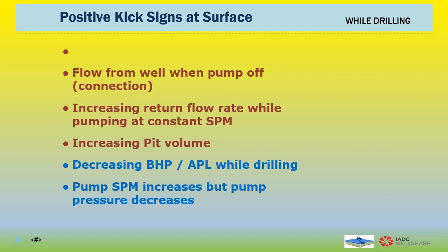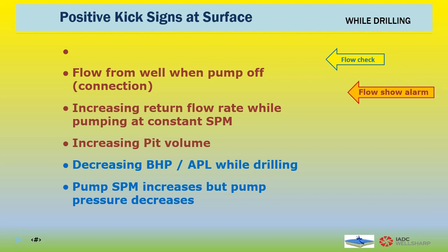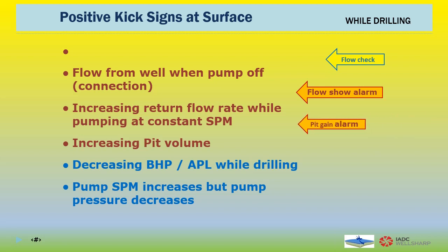How do we know that the well is kicking? 1. Flow from the well when the pump is off, verified by flow check. 2. Increasing return flow rate while pumping at constant SPM, verified by flow show alarm. 3. Increasing pit volume, verified by pit gain alarm. 4. Decreasing bottom-hole pressure or decreasing annular pressure loss while drilling, requires constant annulus pressure monitoring with PWD. 5. Pump SPM increases but pump pressure decreases — this sign is more difficult to verify.